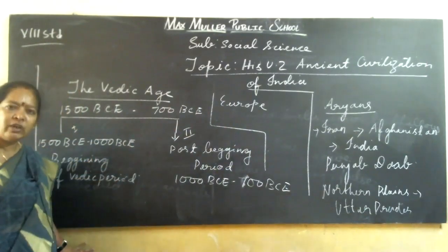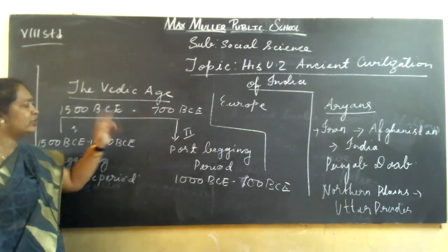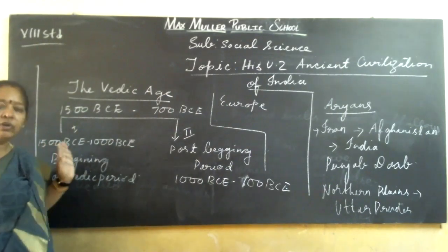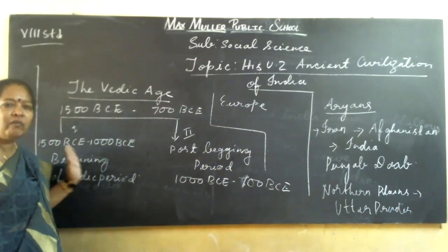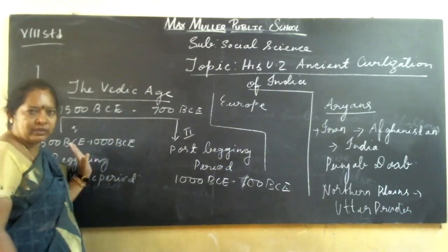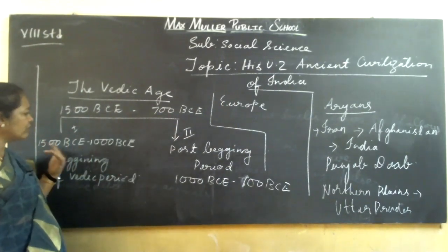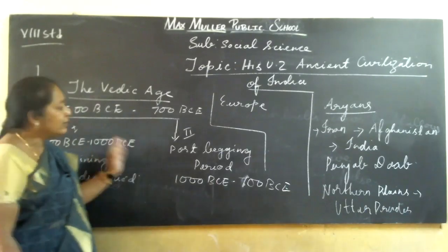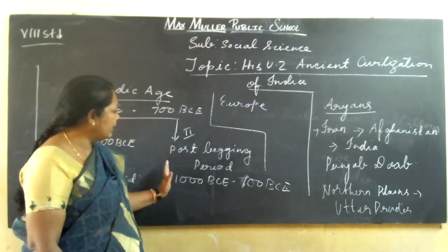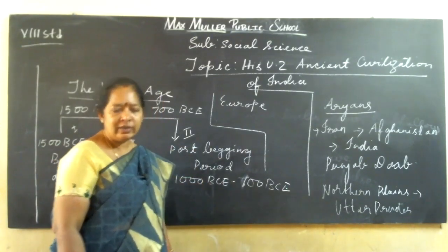So the Vedic age is from 1500 BCE to 700 BCE. It is divided into two parts: the beginning of the Rig Vedic period from 1500 BCE to 1000 BCE, and the second part — the post Rig Vedic period — from 1000 BCE to 700 BCE.